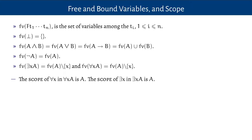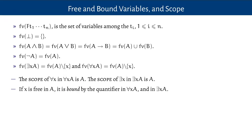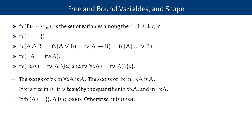The scope of a quantifier — 'for all x' in a formula 'for all x, A' — is the bit the quantifier is added onto, namely the formula A. And if x is free in A, we say it's bound by the quantifier. If a formula has no free variables, we call it a closed formula — it's all shut up and can't be affected by any other quantifier. Otherwise, we call it an open formula.